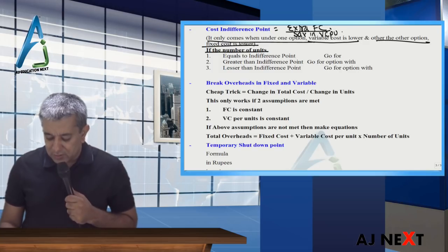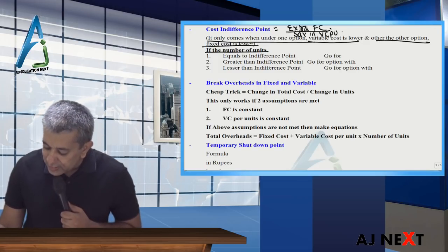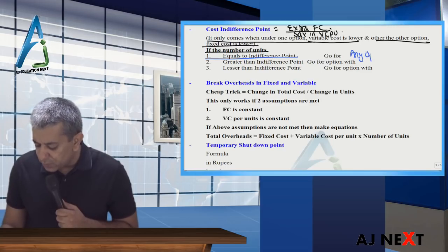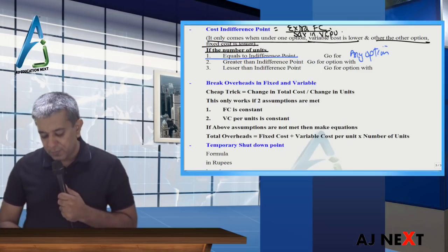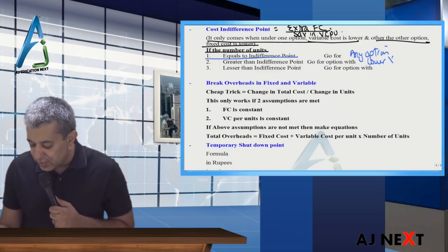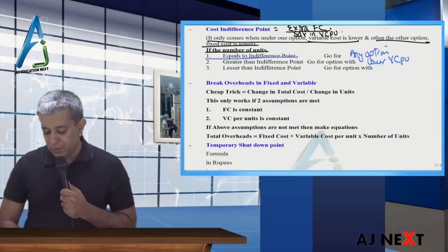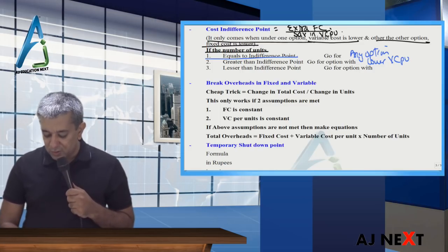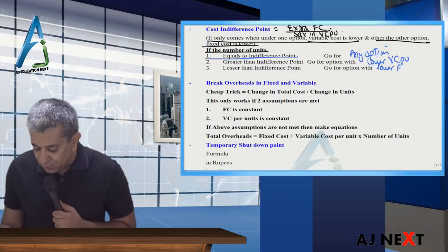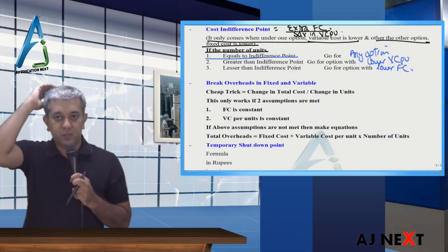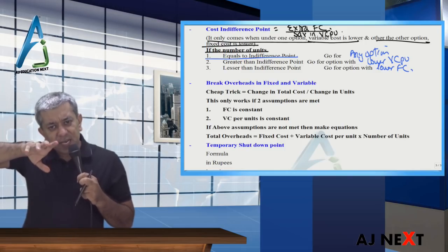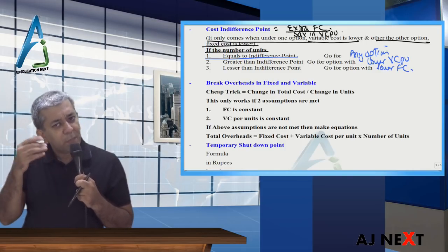If the number of units equals the indifference point, you can go for any option since the total cost will be the same. If units are greater than the indifference point, go for the option with lower variable cost per unit. If units are less than the indifference point, go for the option with lower fixed cost. This is the concept of the indifference point, which can silently help you solve many other questions.